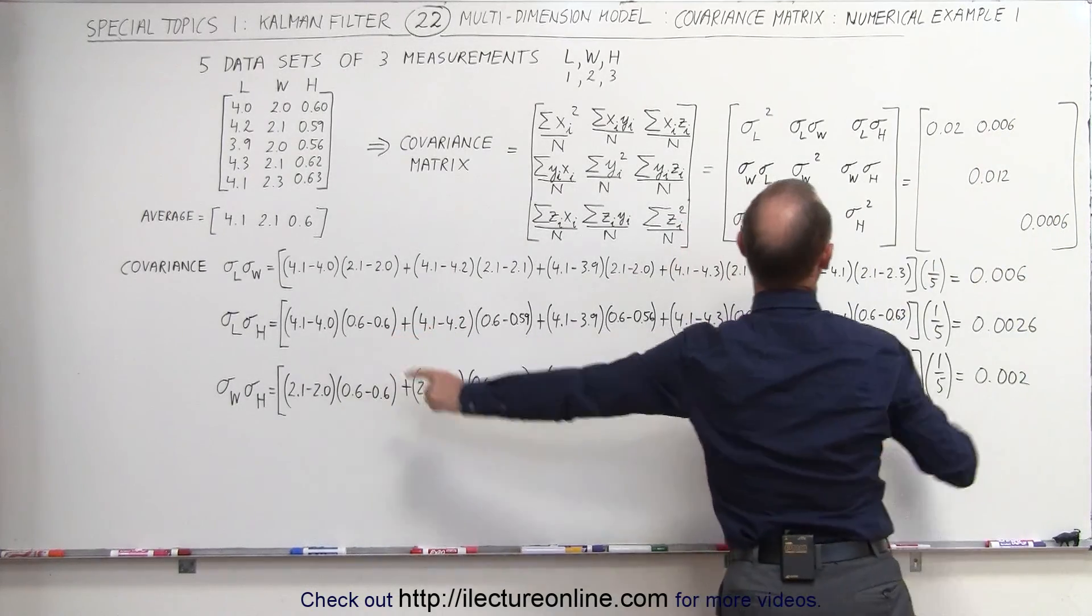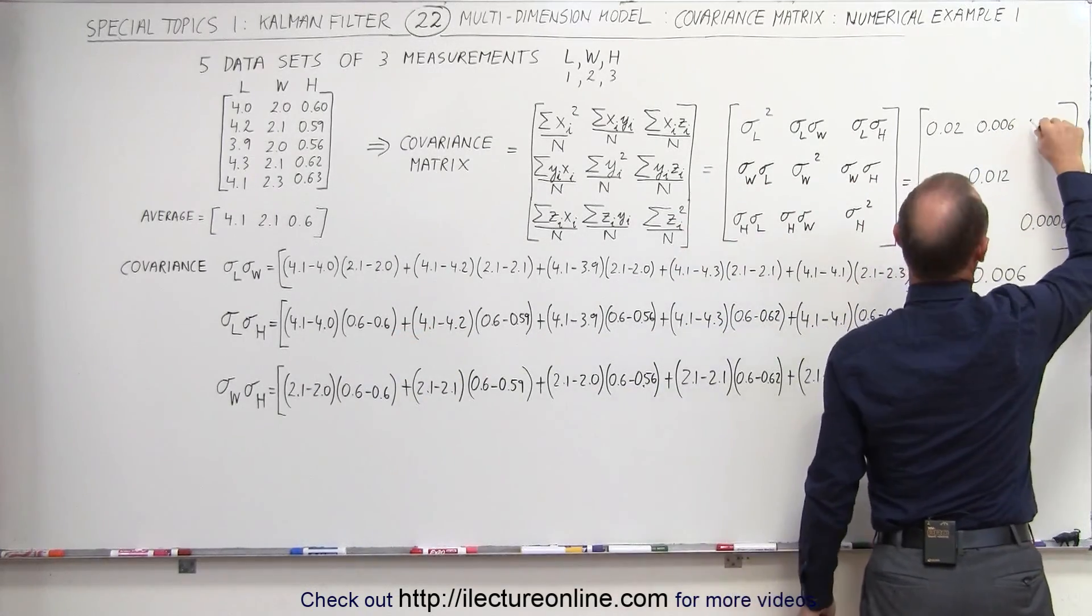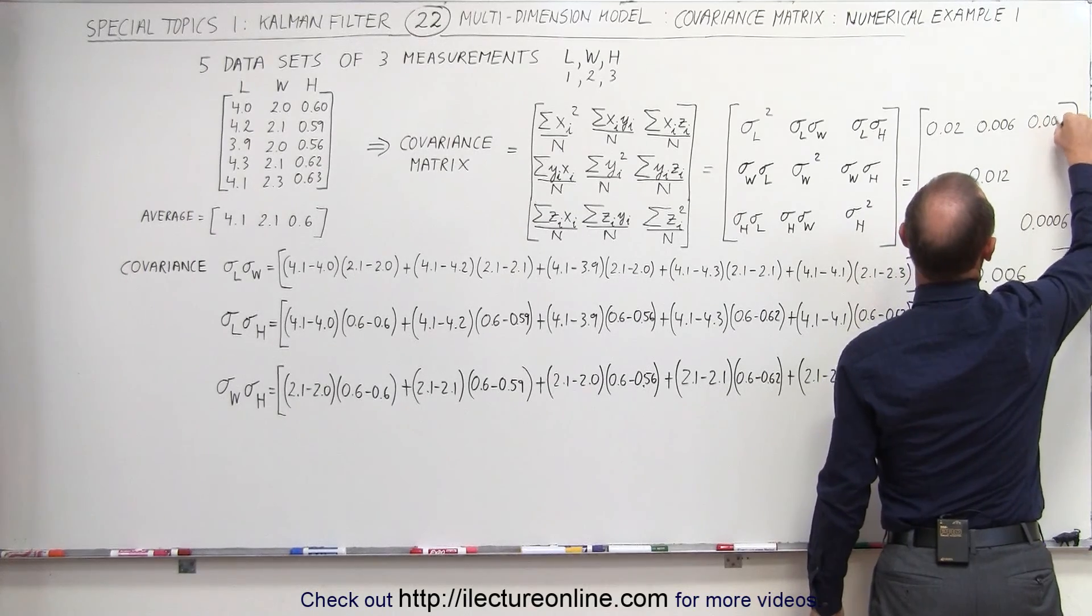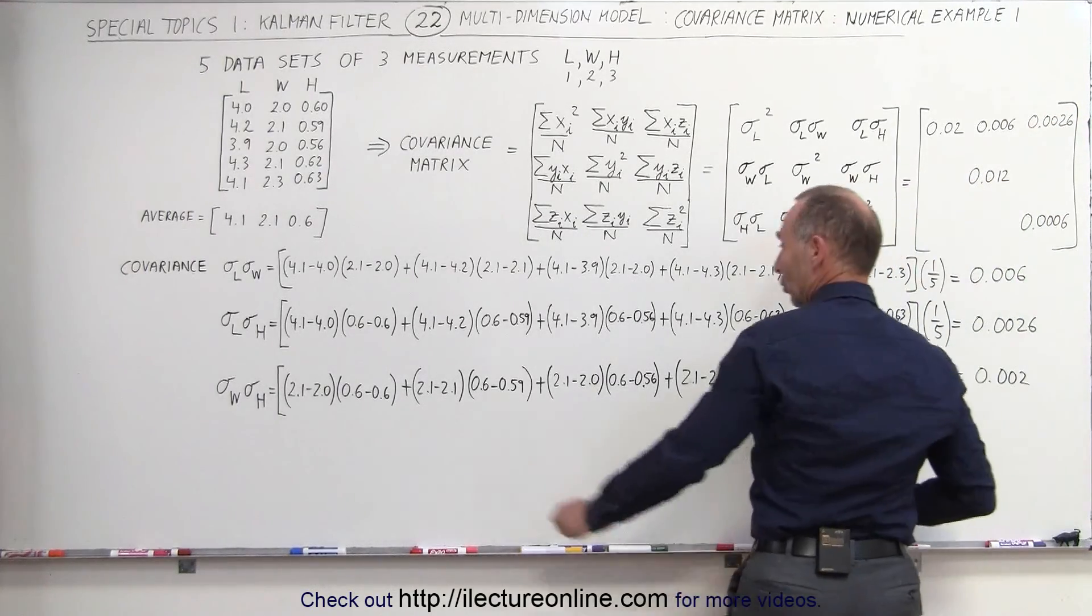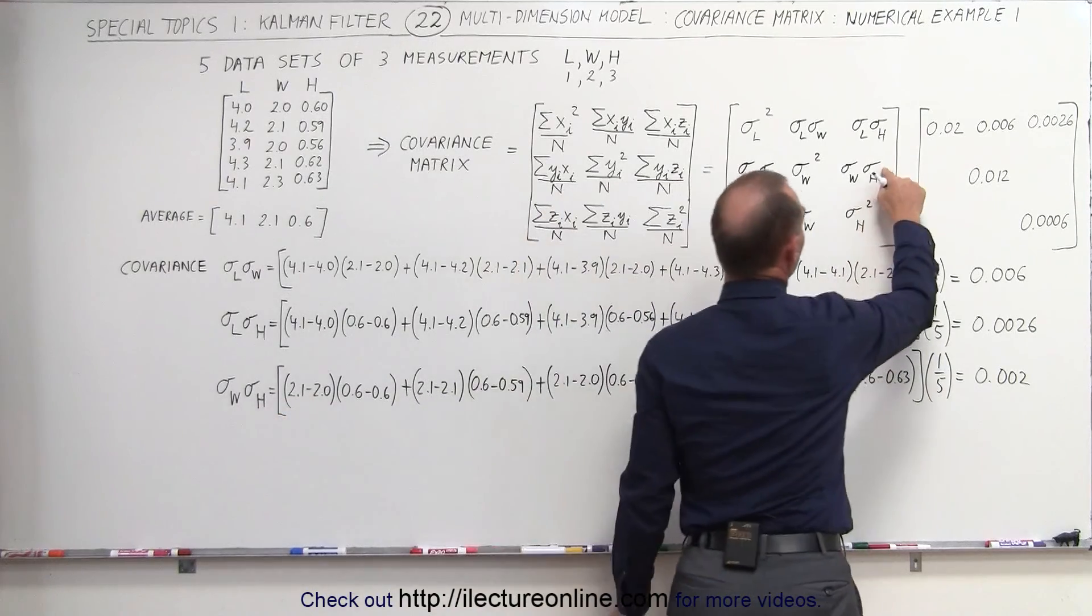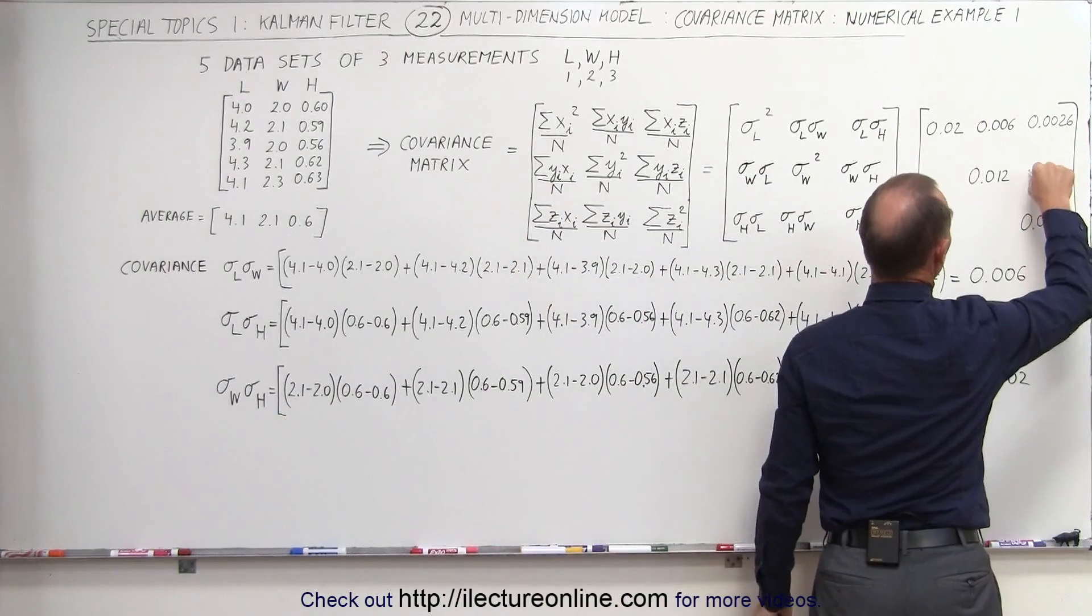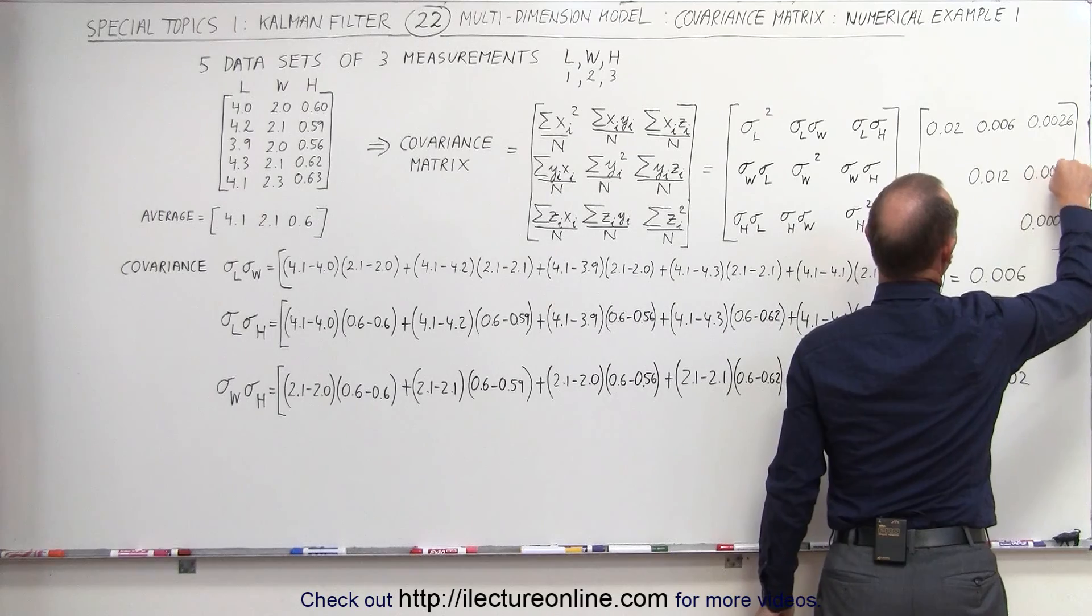The covariance of the length and the height, that would be this number right here, 0.0026, and then we have the covariance between the width and the height, that would be this element right here, and that's going to be 0.002.